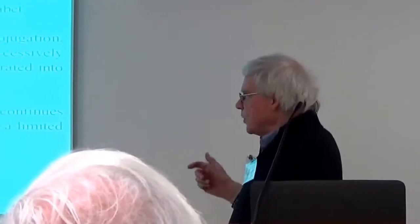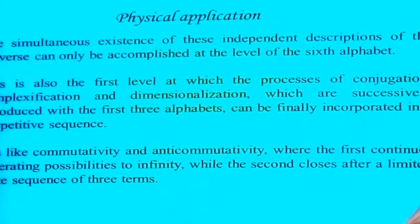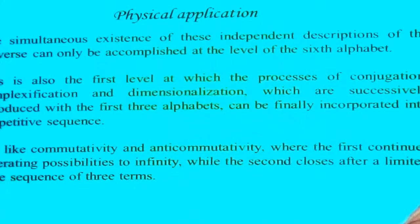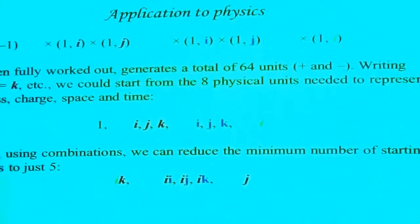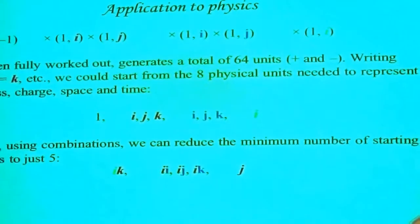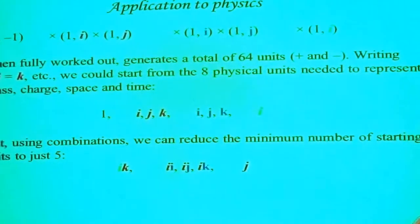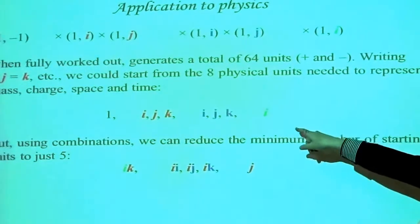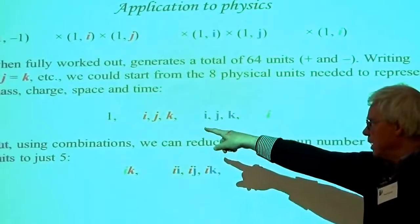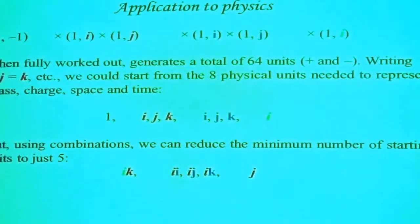In closing, this is the reason why we can introduce numbers — because we have closed cycles. When fully worked out, this generates a total of 64 units. We have units of mass, units of charge, units of space, and units of time. If we multiply all those out, we get the 64. That would be what we call the group of all 64.